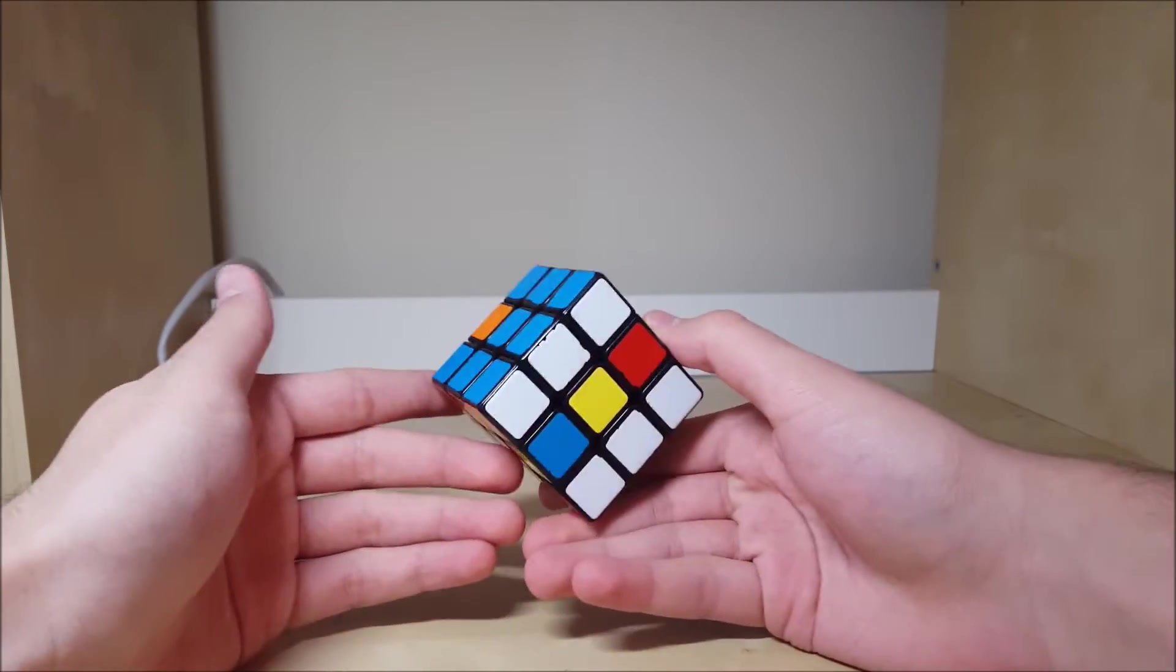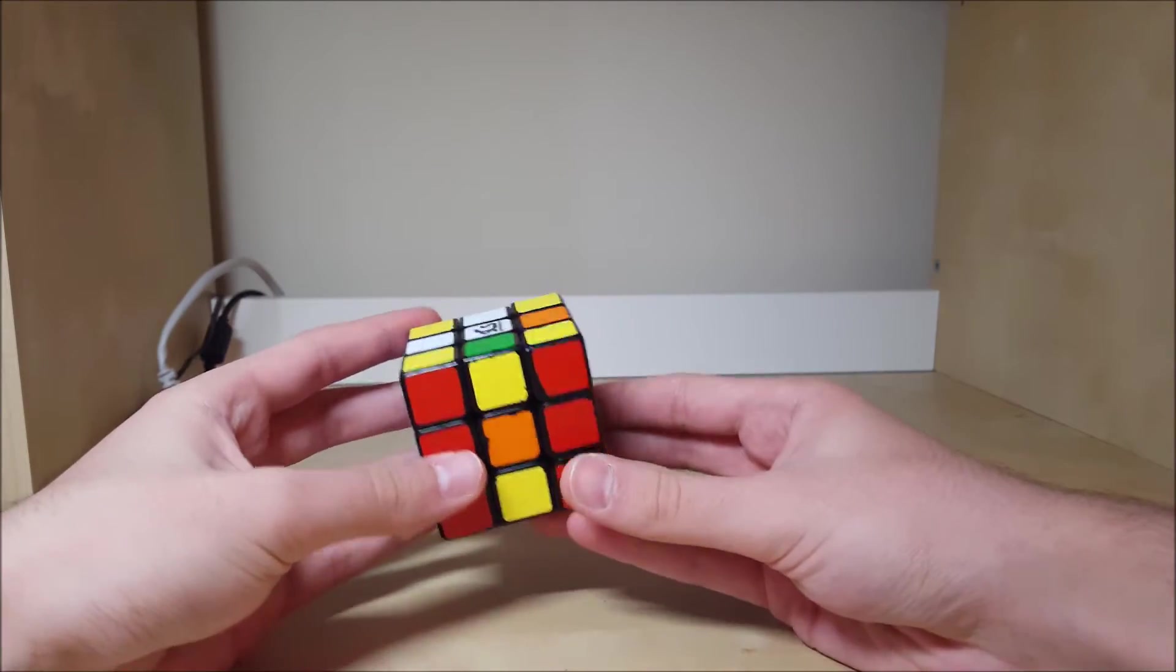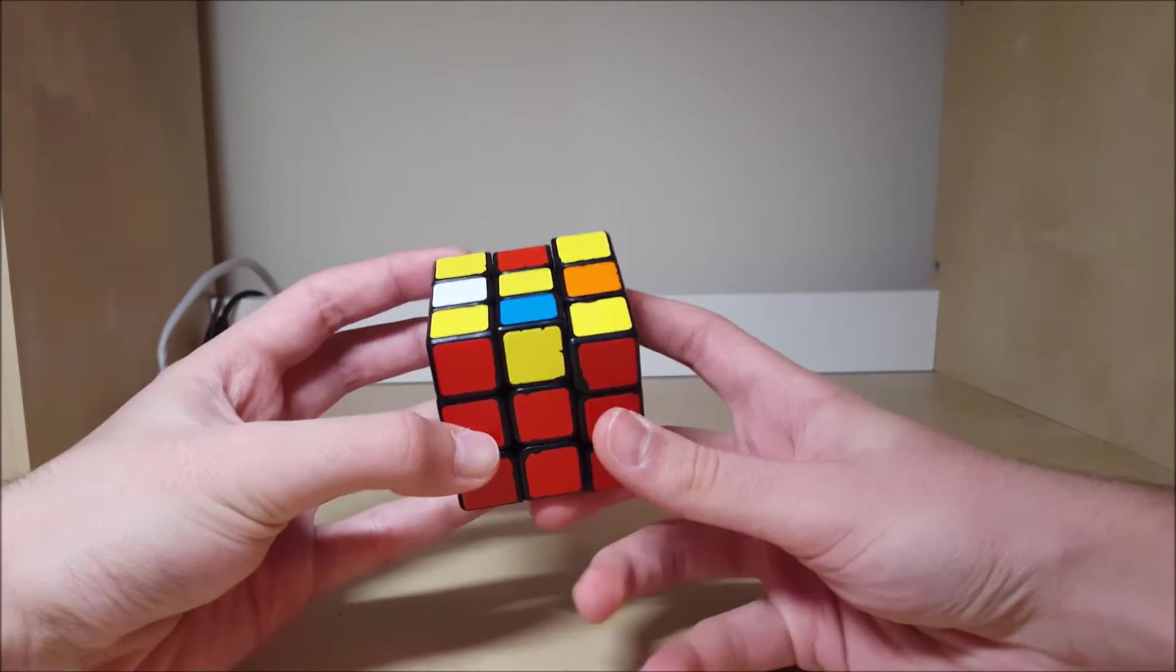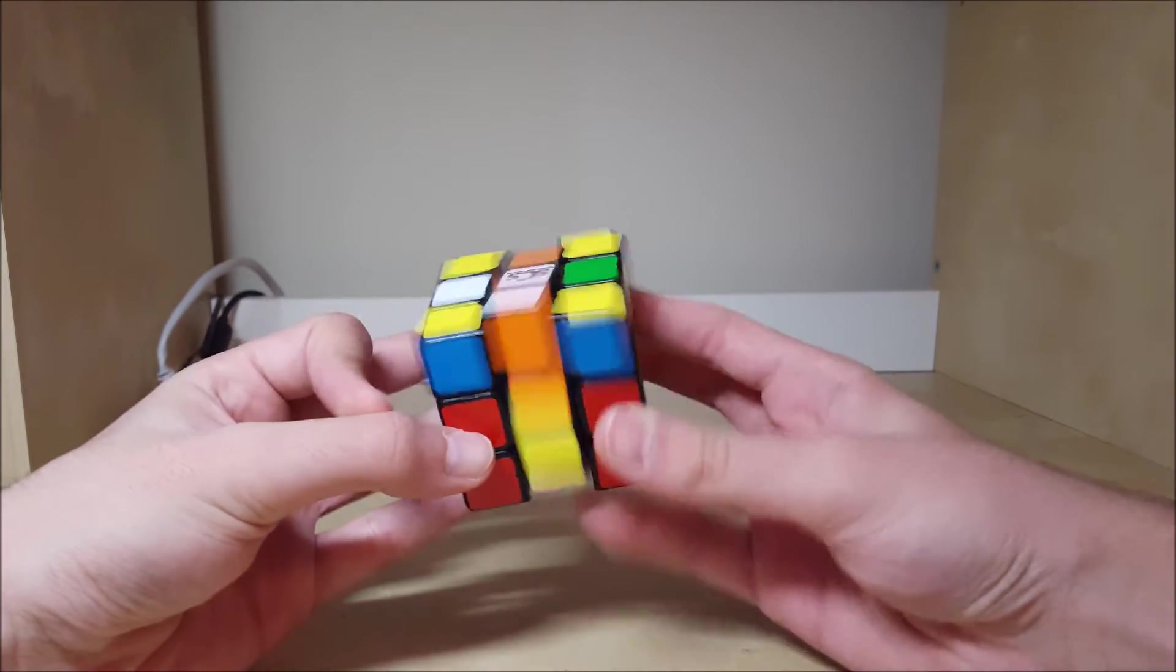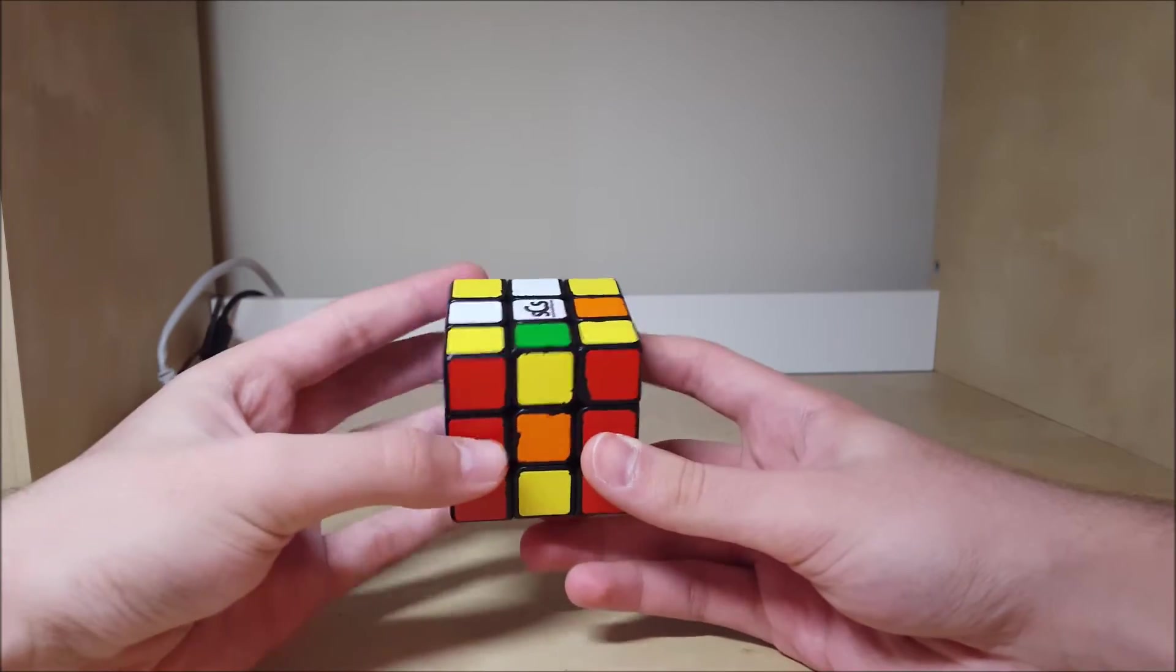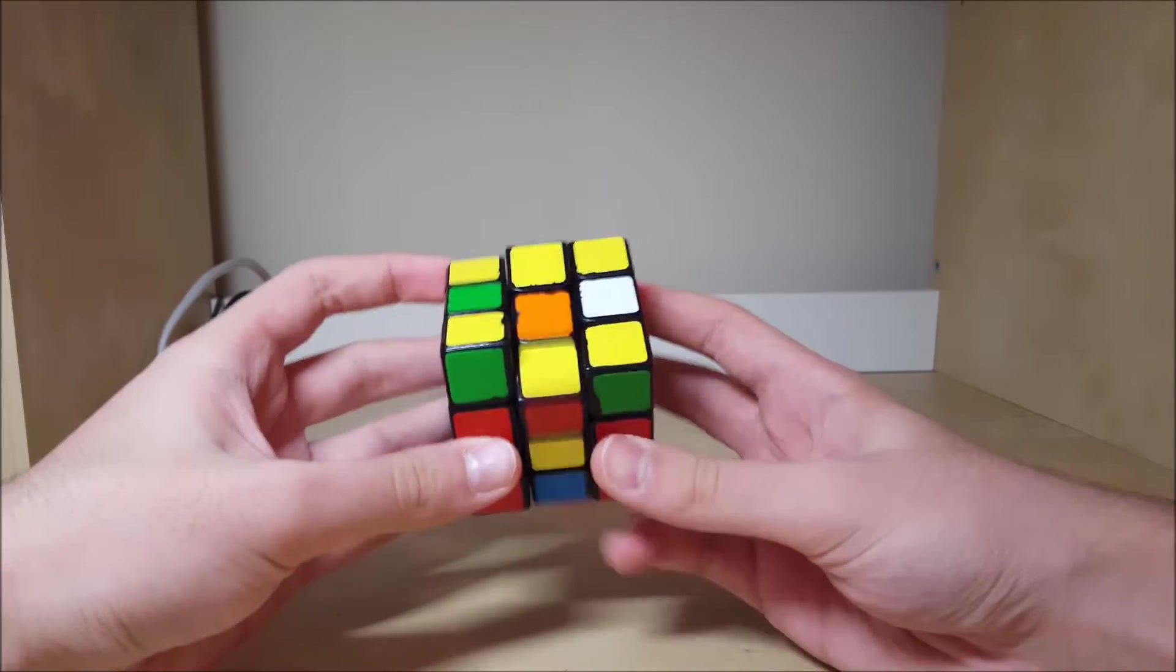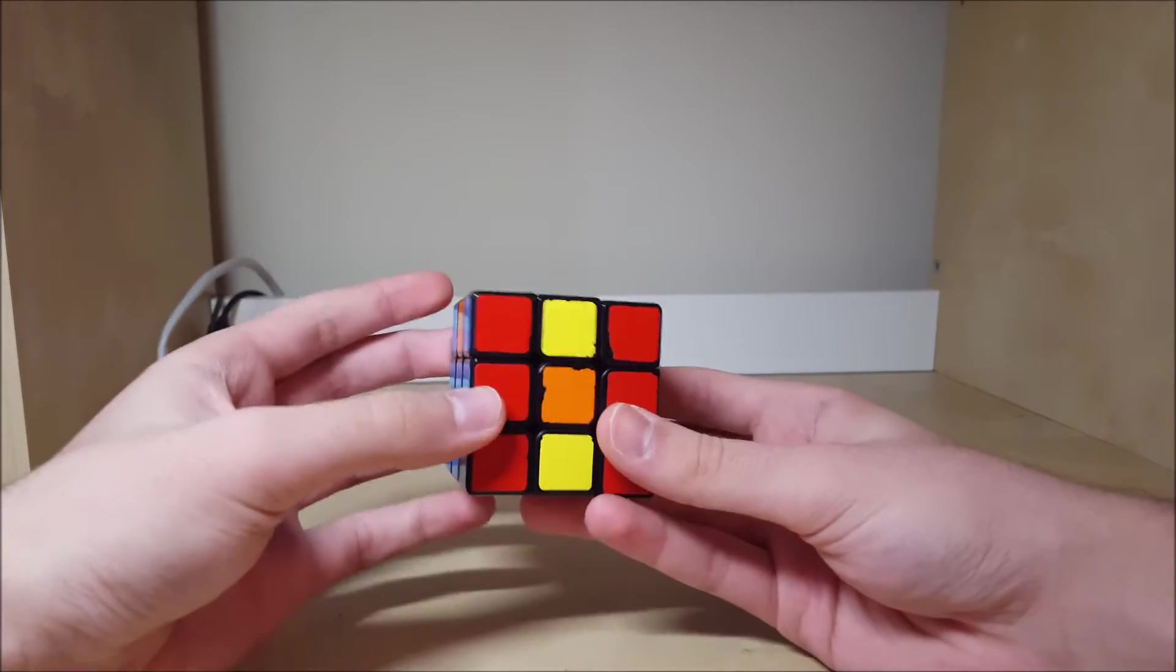You may have noticed during solving that there's a bunch of different ways to solve the same case. Like for this one, when there's two on bottom and two adjacent on top, you can do M2 to get the arrow, you can do U' M2 to get the arrow, you can do U2 M2 to get the arrow, or you can do U M2. And you might be wondering which of those is the best.